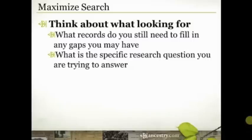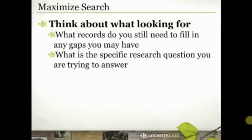Think about what kinds of records might include the information you're looking for. One thing I see a lot on message boards is people looking for birth records for people born in the 1700s and 1800s — and the reality is very few of those actually even exist. Births were not necessarily recorded, certainly not at a state level and very rarely at a town level. Sometimes people recorded them in family Bibles, but that information could be long lost. So there are other ways to get information about when and where a person was born — think about the other kinds of records that might provide that information.